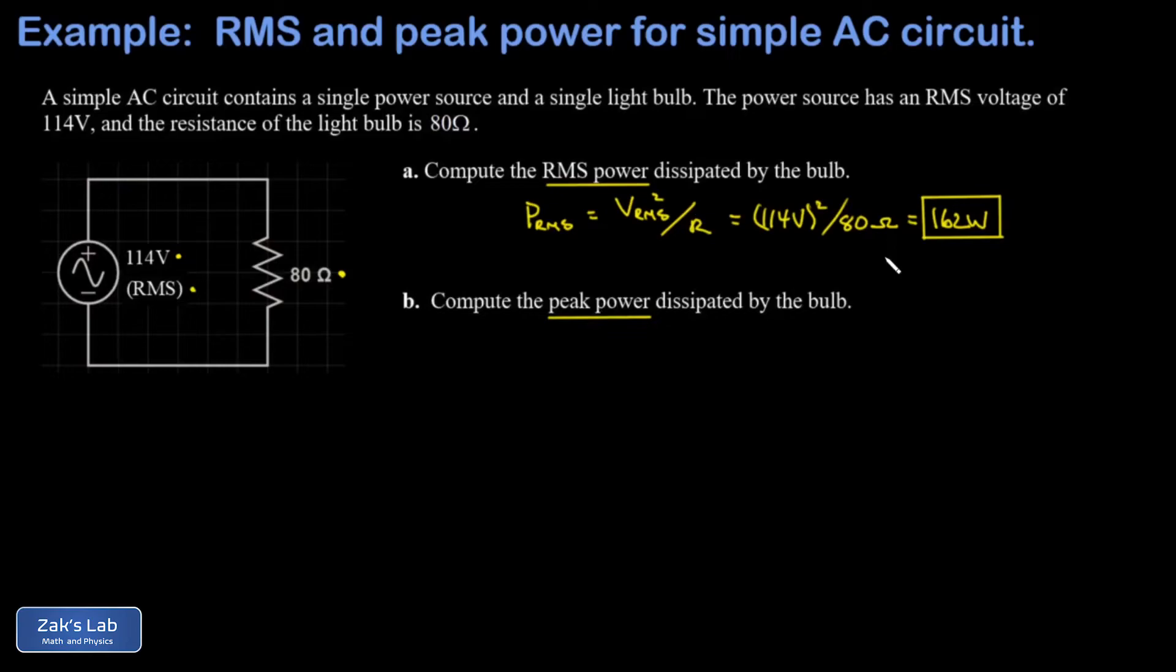Now, as it turns out, the peak power is twice as much as the RMS power. We normally call that P naught. And again, the derivation of that fact is in the video that I linked. So all I do is take my previous answer and multiply by two. I kept some extra decimal places before I multiplied by two, so this ends up rounding to 325 watts.